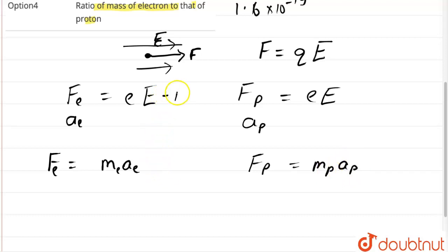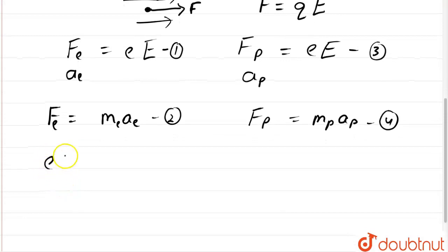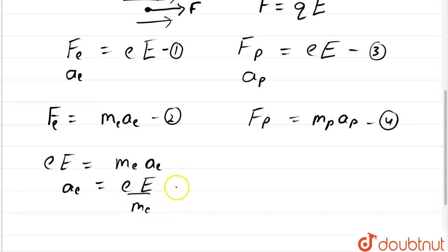Now, let us name this equation as 1 and 2, and these as 3 and 4. Now, from 1 and 3 for electron, we can write eE is equal to me into ae, and from this we can write acceleration of electron is equal to eE upon me. Let us name this equation 5.